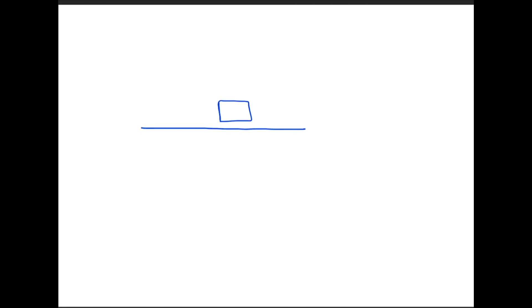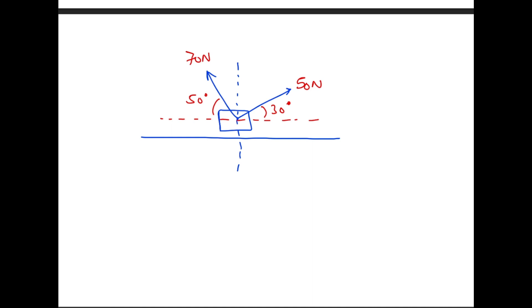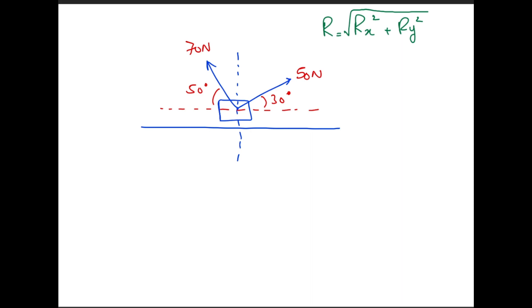Now let's solve a vector addition problem. An object on the floor experiences two forces: 15 newtons at 30 degrees and 70 newtons at 50 degrees (angles given with respect to the horizontal). The resultant is calculated as the square root of (resultant-x² + resultant-y²), derived from the Pythagorean theorem. The x-axis components are: 15 cos 30 and 70 cos 50.